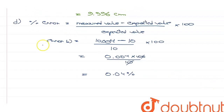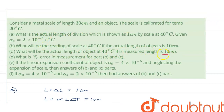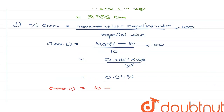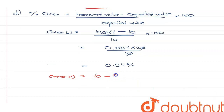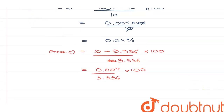Now the error in C. The measured value is 10.004 centimeters. So 10.004 minus the actual value of 9.996, divided by 9.996, into 100, which gives us 0.004 upon 9.996 into 100, approximately equal to 0.04 percent.